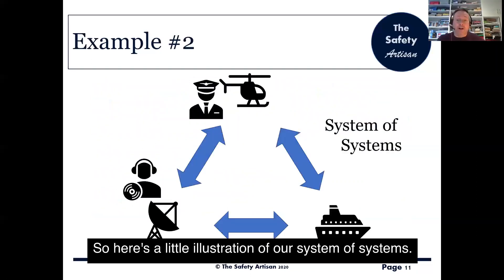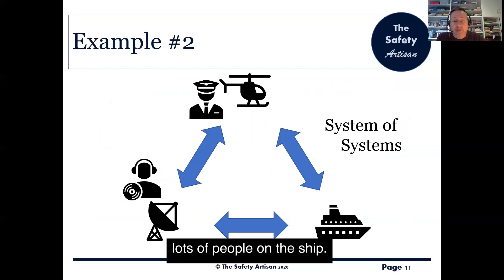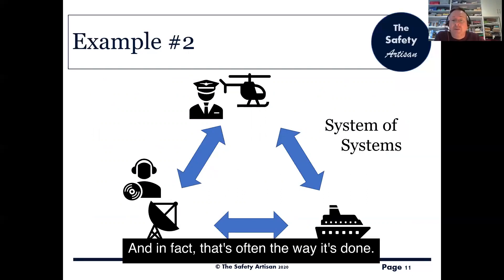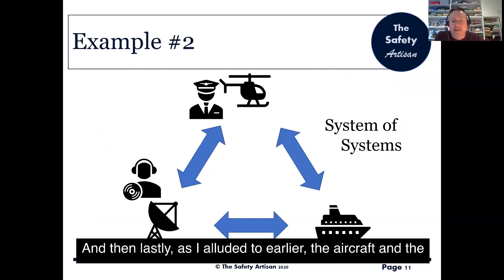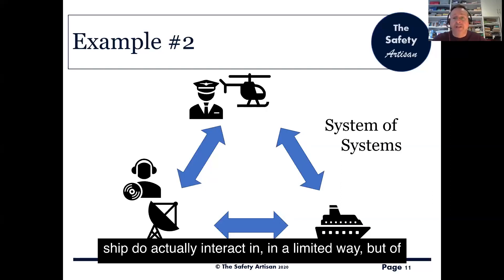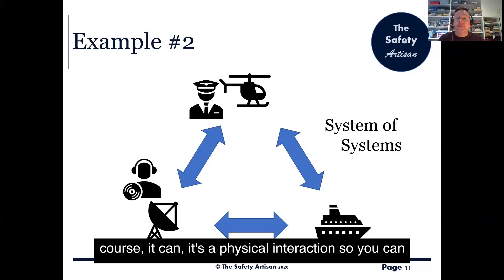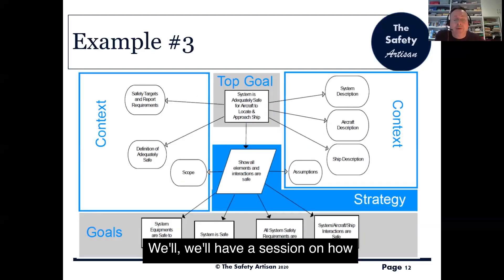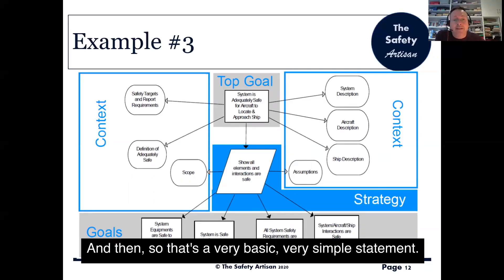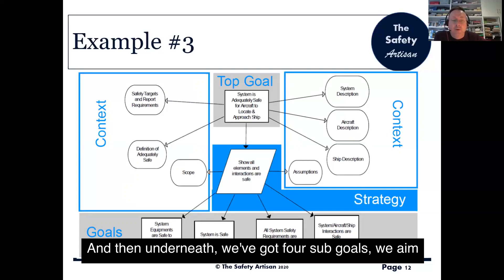Here's a little illustration of our system of systems. In the bottom right-hand corner we've got the ship with lots of people on it — and that's often the way it's done. The aircraft and the ship do actually interact in a limited way, but it's a physical interaction so you can actually hurt people. We'll have a session on how to do GSN another time.